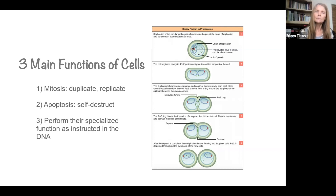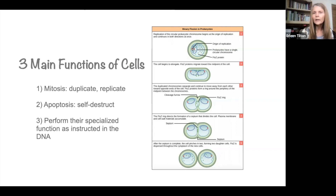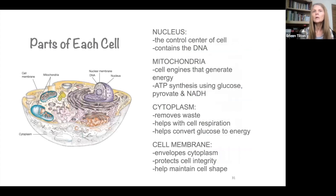Number three is to perform their specialized function as instructed in the DNA. All of our cells — whether it's a nerve cell, brain cell, or blood cell — have their specialized functions, and their DNA is like computer software codes giving them instructions. People say you can't change your DNA, but yes, you can. Everything that you do influences your DNA. We can see that more when we look at the parts of each cell. The nucleus is the control center of your cell — that's where the DNA is.